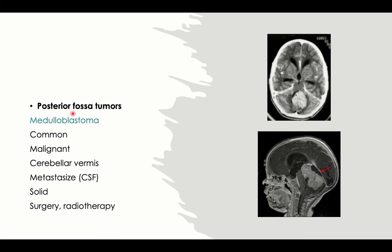The other posterior fossa tumor is medulloblastoma, which unlike astrocytoma is highly malignant. It has a tendency to metastasize through the CSF, either inside the central nervous system — whole brain and spinal cord — or even outside the nervous system to distant areas. It usually presents in the cerebellar vermis, so it is typically central, usually solid rather than cystic, and treatment involves surgery followed by radiotherapy due to its malignant nature.